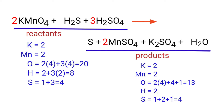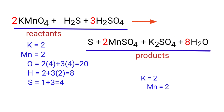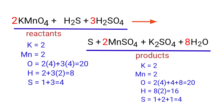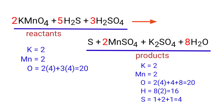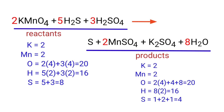Now we need to balance the oxygen atoms. To do this, we need to put a coefficient of eight in front of H2O, then adjust to a coefficient of five in front of H2SO4. The oxygen atoms are now balanced.